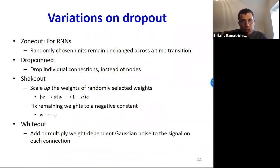So, dropout was very successful and naturally people tried to extend it, and so there have naturally been many variations of the idea that have been proposed. Zoneout for RNNs, for example, where randomly chosen units remain unchanged during a time transition. Or drop connect, where instead of switching off individual neurons, you switch off individual connections between neurons. Or shakeout which scales up the weights of randomly selected weights and fixes the remaining weights to a negative constant. Or whiteout which adds or multiplies weight dependent Gaussian noise to the signal on each connection and there have been several other variations on the theme.